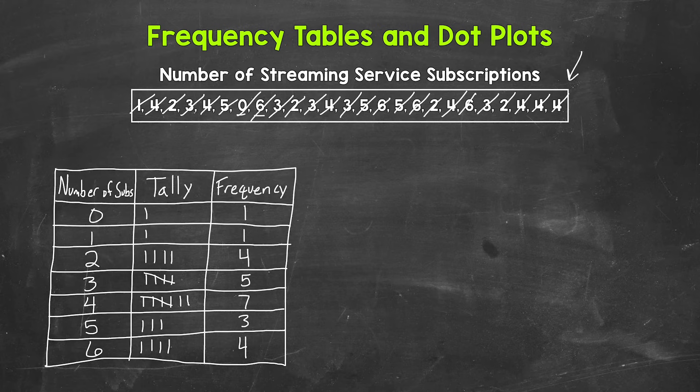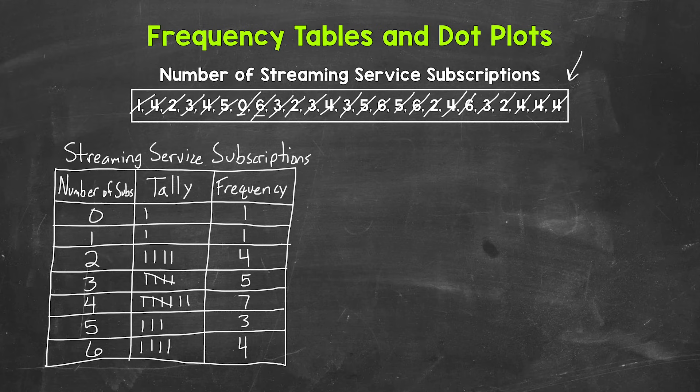Let's wrap this table up with a title up top, so streaming service subscriptions. And that's it for our frequency table. So you can see that this table helped us organize our data. This is much easier to interpret. It's much more meaningful than just looking at a list of numbers.